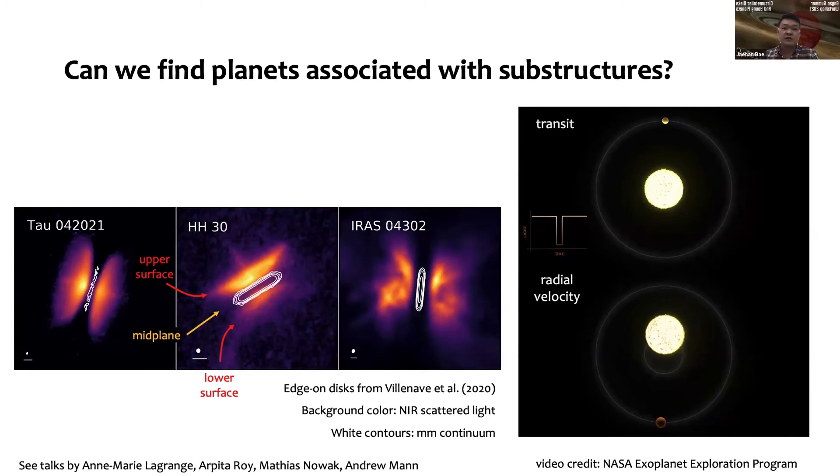For radial velocity we need to take many spectra over time, so you need to be able to see the stars directly. But unfortunately young stars are surrounded by circumstellar disks. These are three images for edge-on disks. What you see in the color scale—orange, purple—is near-infrared scattered light image tracing small grains lifted up to the surface.